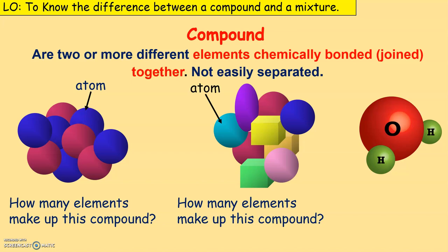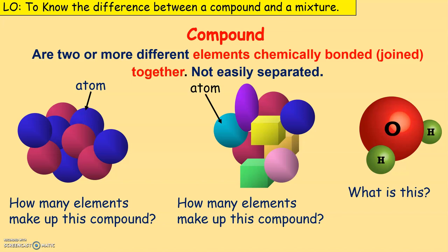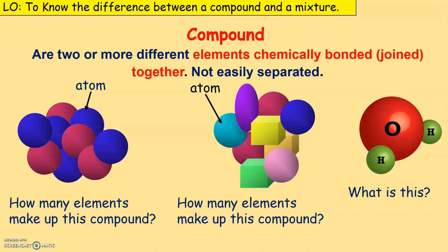You can ask yourself how many atoms make up each compound shown. Examples of compounds include: water — made up of hydrogen and oxygen; salt — sodium and chlorine; sugar — carbon, hydrogen, and oxygen; carbon dioxide — carbon and oxygen; and vinegar — carbon, hydrogen, and oxygen. The structure differs even when the elements are the same.